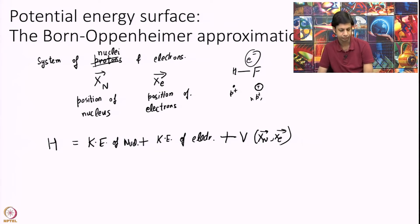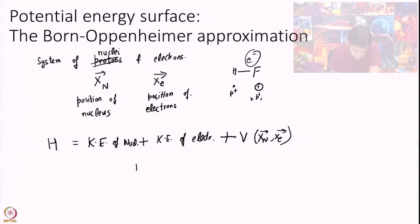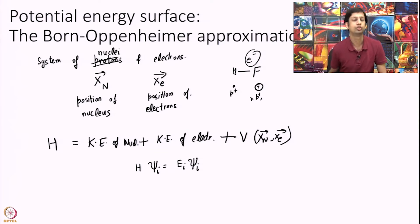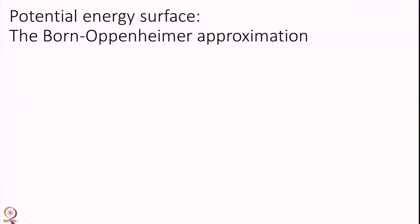Now the equation I want to solve is H psi_i equal to E_i psi_i. It turns out this is near impossible to solve. Mathematicians have tried it for a long time but one just cannot do it. Even with computers, this equation is close to impossible to solve. So what we do is use the Born-Oppenheimer approximation, introduced in 1927 or 1928.